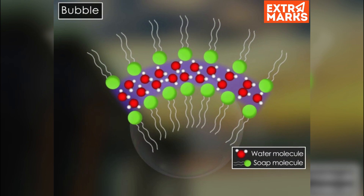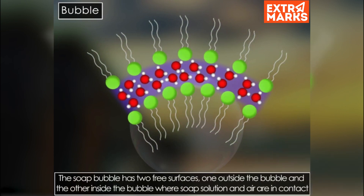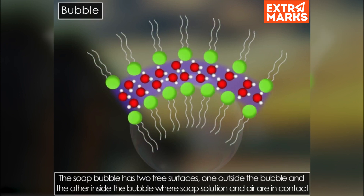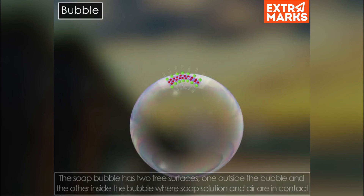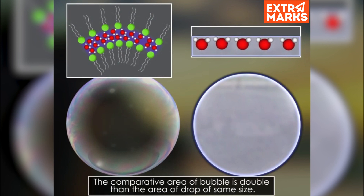The hydrophobic ends of the soap molecules mix with the water and form two layers of soap molecules. In between these layers, water molecules are trapped. Thus, each soap bubble possesses two surface films of soap molecules, and hence the comparative surface area of a soap bubble will be double that of a liquid drop of the same size.